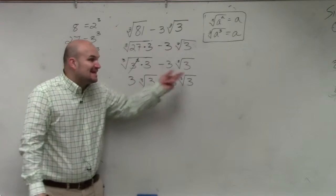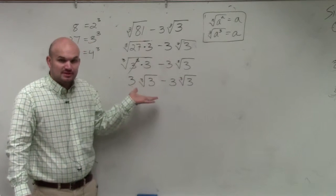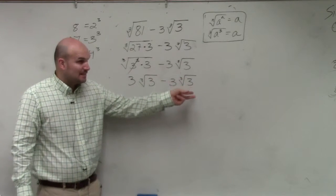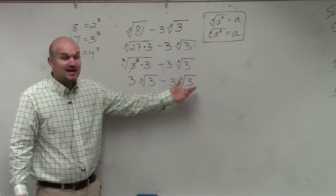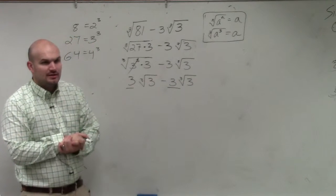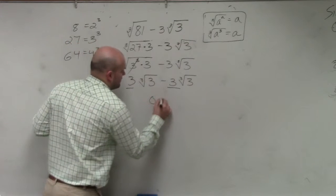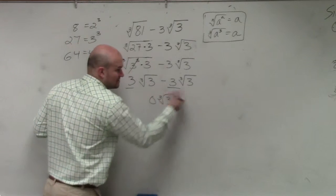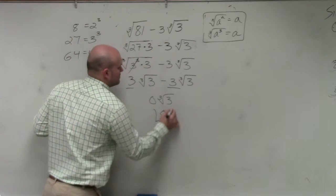So basically, is my index the same? Are they both cube roots? Is the radicand the same? So all I need to do is subtract or add the coefficients. So what's 3 minus 3? 0. And 0 times anything is 0.